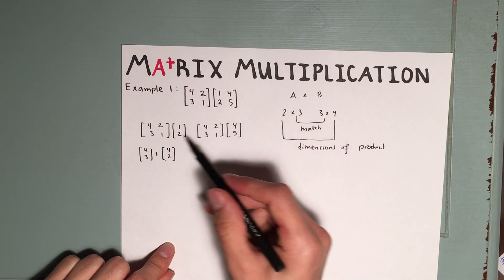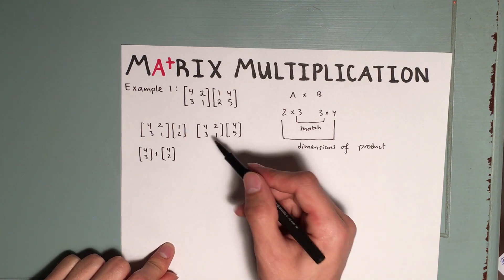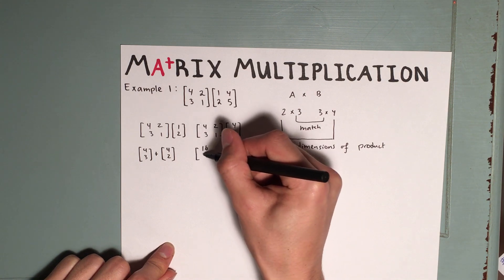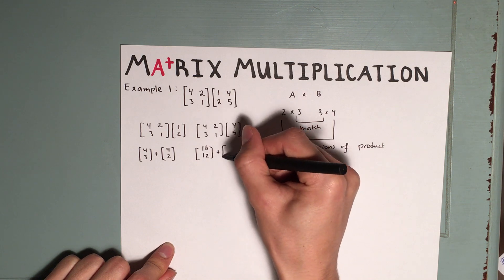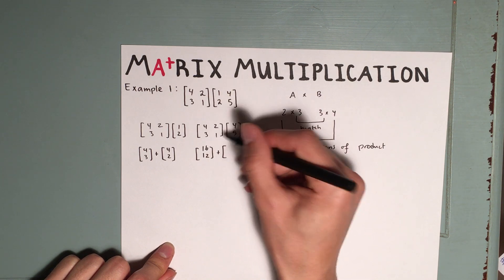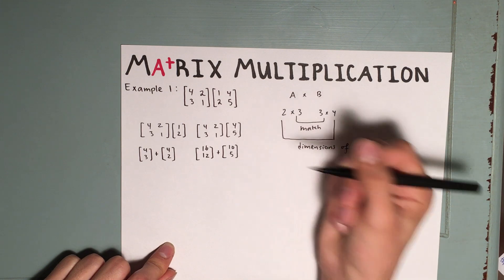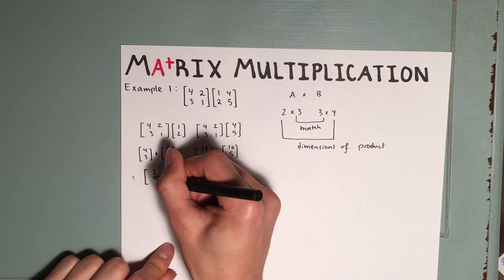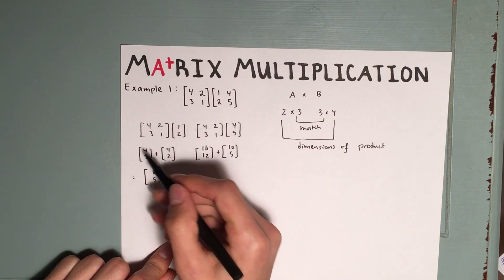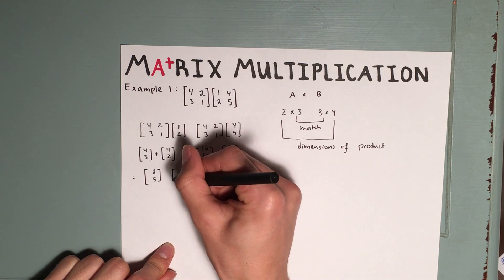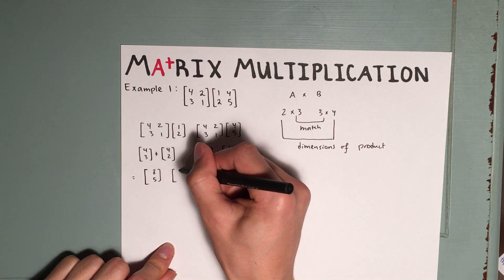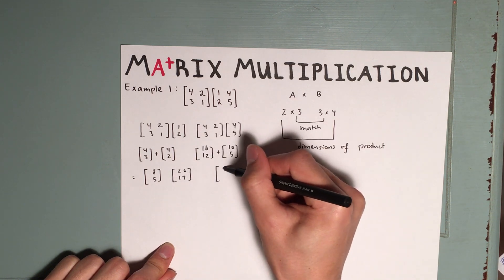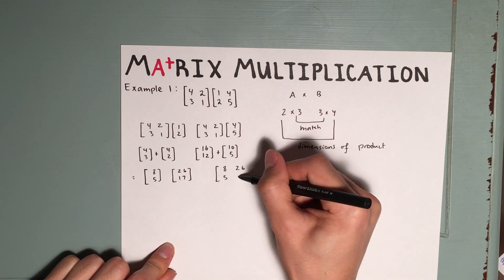For the second column of the final matrix, we're going to do the same thing. So we'll first distribute this 4 to this 4 and this 3, so that's going to give us 16 and 12. And then we're going to add that to 5 times 2 and 5 times 1, that gives us 10 and 5. So our final matrix is going to have a first column of 8, 5, which is just 4 plus 4 and 3 plus 2, and a second column of 26 and 17. So the final matrix is going to be 8, 26, 5, 17.